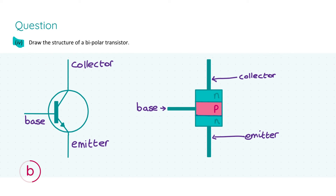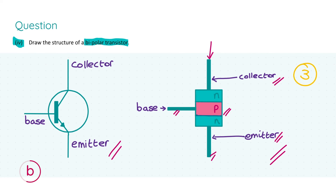Moving on to part four, we're asked to draw the structure of a bipolar transistor. I've drawn both the circuit symbol and the actual diagram. We have a lightly doped piece of p-type semiconductor — the base — sandwiched between two thicker, more heavily doped n-type pieces: the collector and the emitter. All three are formed on one crystal of semiconductor material. There are three components, so three sets of marks: three for the first correct component, two for each of the remaining two.